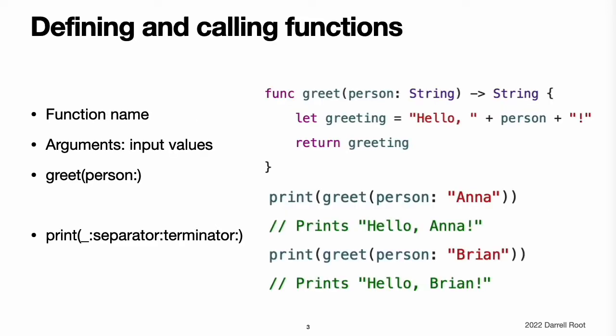Defining and calling functions. When you define a function, you can optionally define one or more named, typed values that the function takes as input, known as parameters. You can also optionally define a type of value that the function will pass back as output when it is done, known as its return type. Every function has a function name, which describes the task that the function performs. To use a function, you call that function with its name and pass it input values, known as arguments, that match the types of the function's parameters. A function's arguments must always be provided in the same order as the function's parameter list.